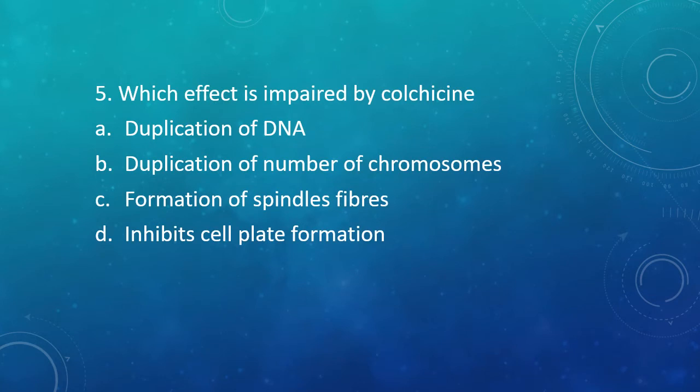Question 5: Which effect is impaired by Colchicine? Option A: Duplication of DNA. Option B: Duplication of number of chromosomes. Option C: Formation of spindle fibers. Option D: Inhibits cell plate formation. The correct answer is Option B — it inhibits duplication of the number of chromosomes.